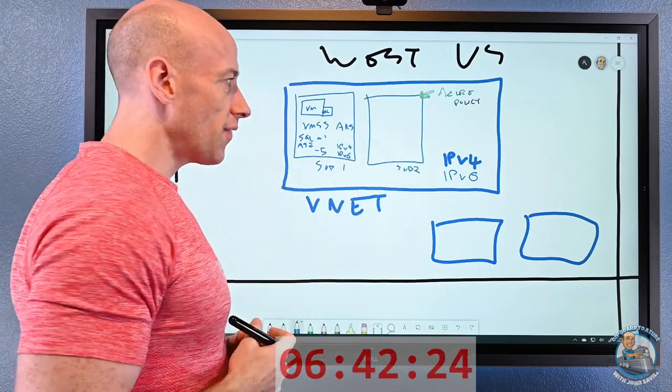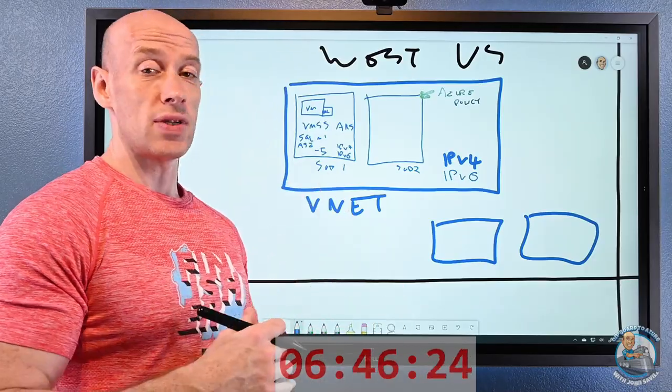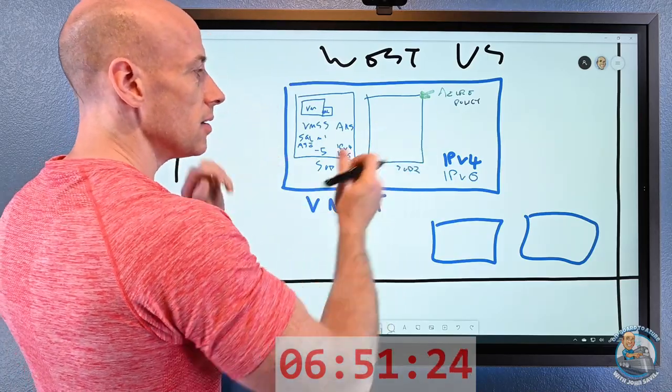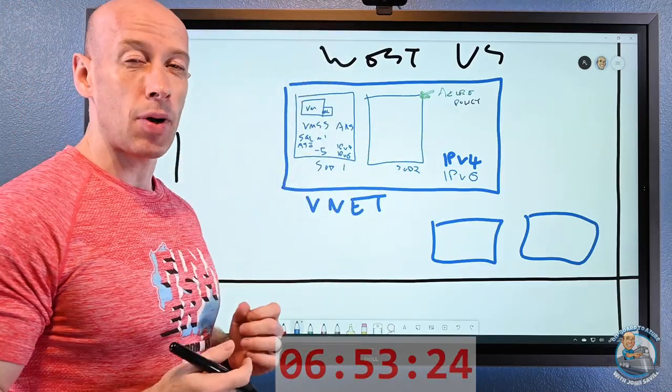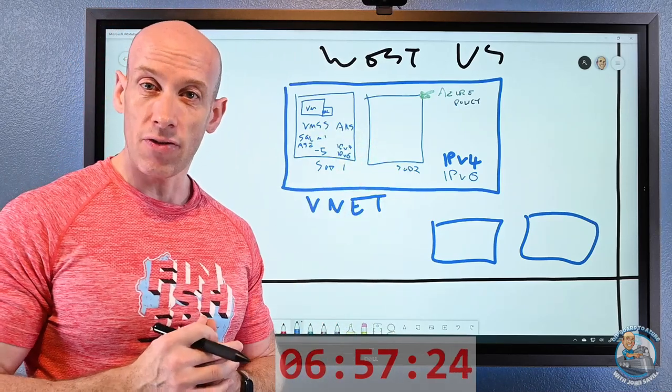If I want to control the flow of traffic, I can use network security groups. I can use Azure Firewall. I could use network virtual appliances. There's a number of options to control that flow. Anything in a VNet can access the internet by default and get a stateful response. And that service is provided for me automatically.